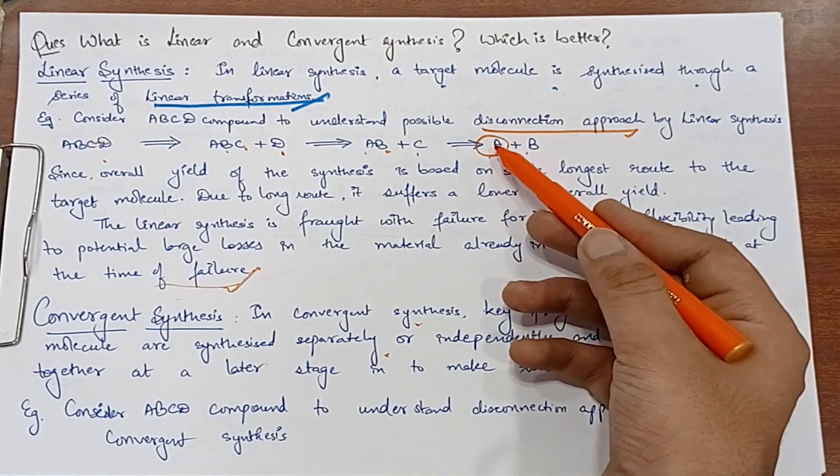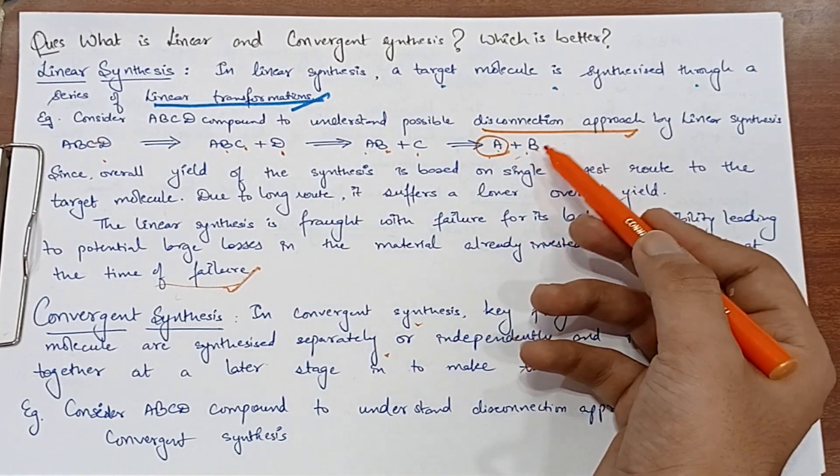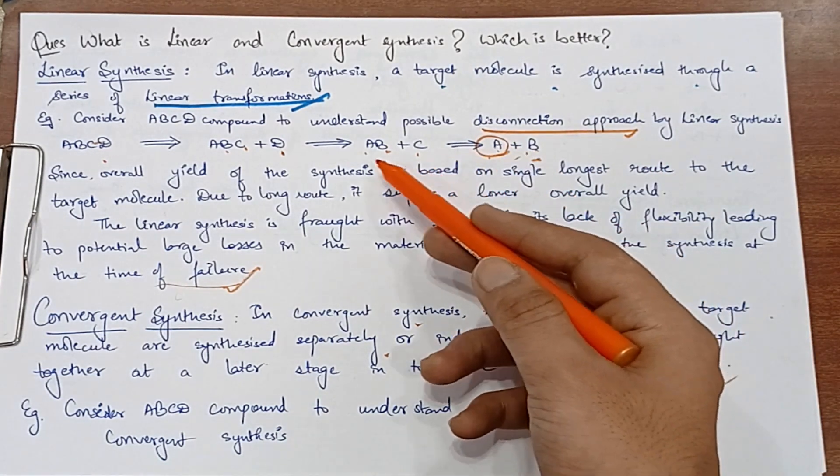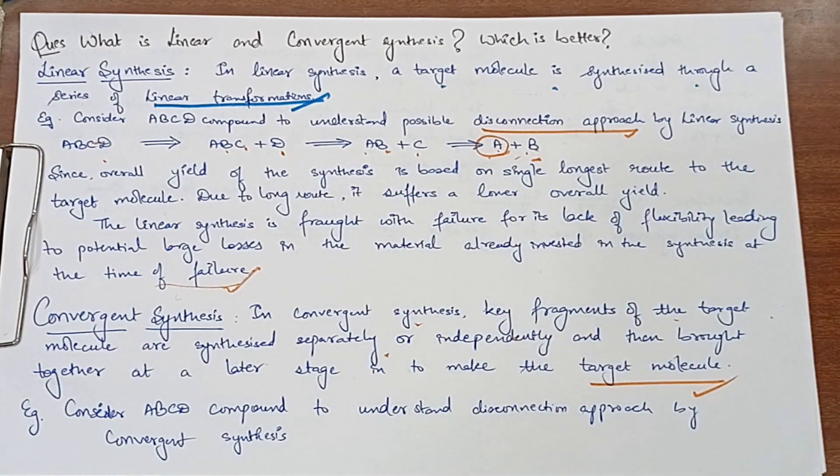Yaha par toh hum synthesis kaise karenge. Pehle A ko B ke saath join kiya, B ko C ke saath, C ko D ke saath. Is tarike se dheere dheere join kiya. Or lekin hum dono alag alag fragments jaise AB or CD, in dono ko join karke hamara kathe ABCD bana sakte hain. Toh is tarike se hamari hoti hai convergent synthesis.